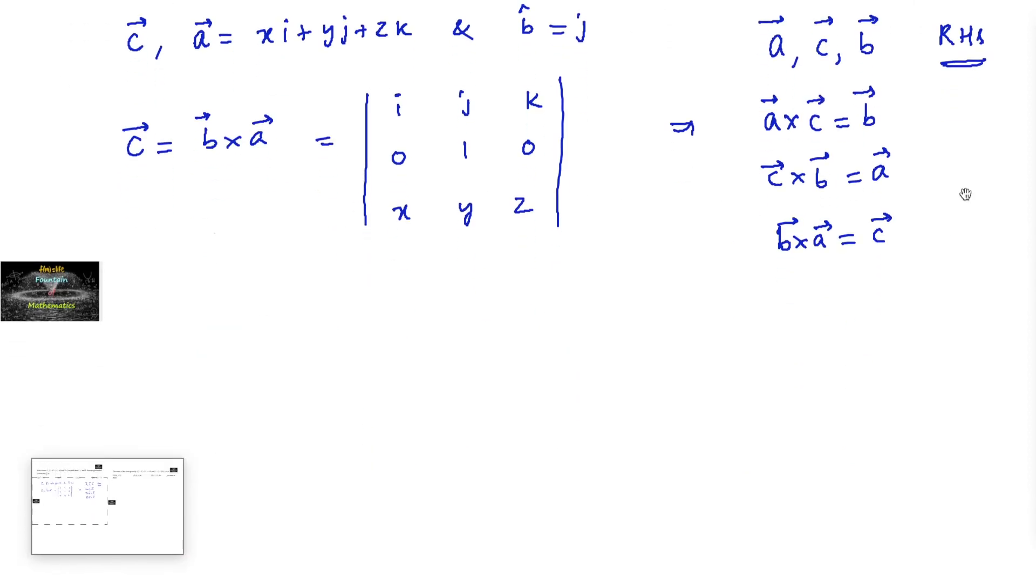This equals i times z minus j times 0 plus k times minus x, which we can write as z i minus x k.